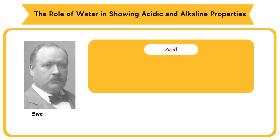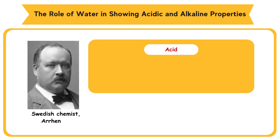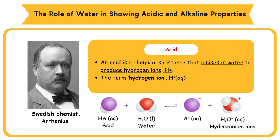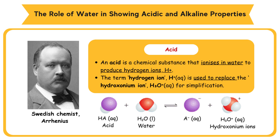Acid. The Swedish chemist Arrhenius states that an acid is a chemical substance that ionizes in water to produce hydrogen ions. The term hydrogen ion, H+ (aqueous), is used to replace the hydroxonium ion, H3O+ (aqueous), for simplification.